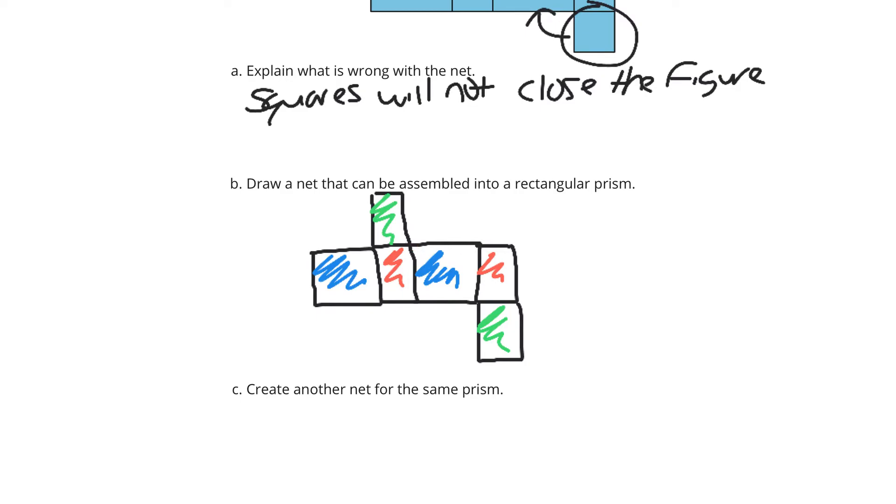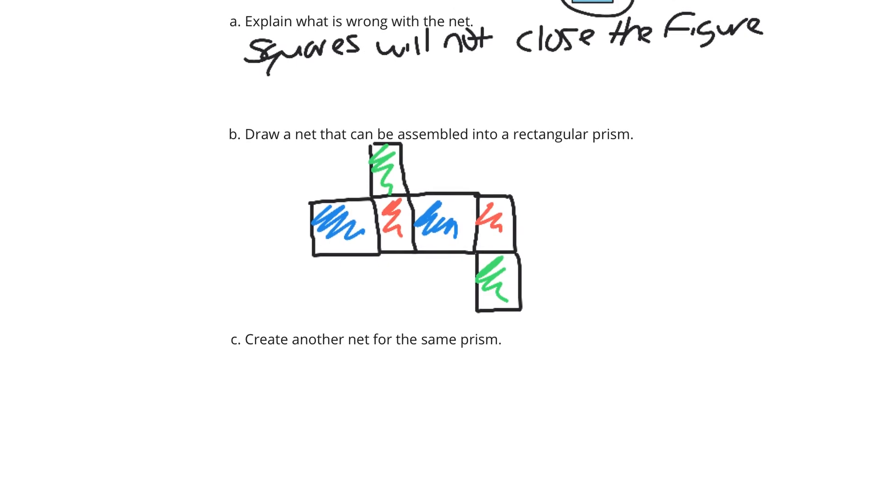Three. Create another net for the same prism. Well, if I take a rectangle here, and this is going to be that green rectangle, and then a square.